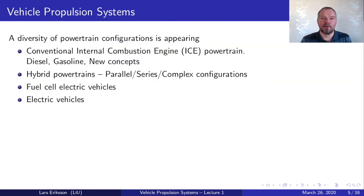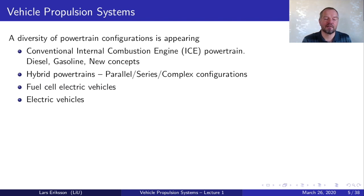When we look at what's going on in society, we see a diversity of powertrain configurations appearing. We have conventional internal combustion engine powertrains — the diesel engine, the gasoline engine — and new concepts like the Mazda SkyActiv-X, which is a mixture between diesel and gasoline processes. We also have hybrid powertrains with parallel, series, and complex configurations, fuel cell electric vehicles, and electric vehicles that are taking a bigger share of the market, though the market share is still increasing.